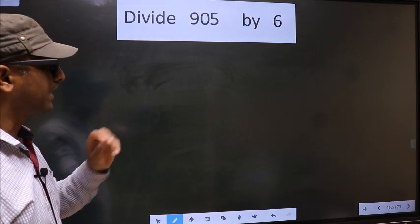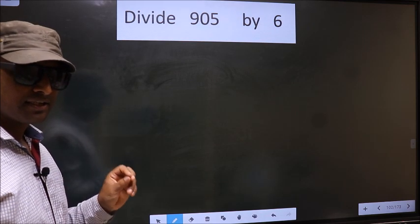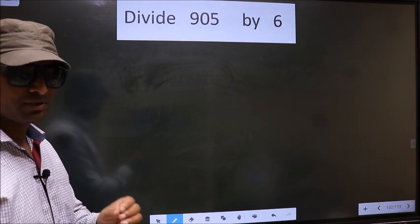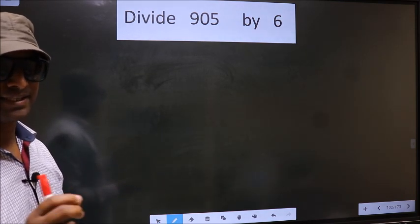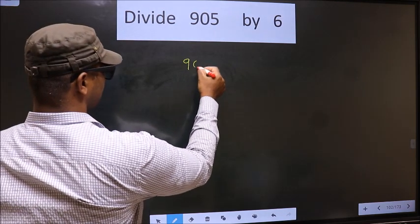Divide 905 by 6. While doing this division, many do this mistake. What is the mistake that they do? I will let you know, but before that we should frame it in this way: 905 divided by 6.